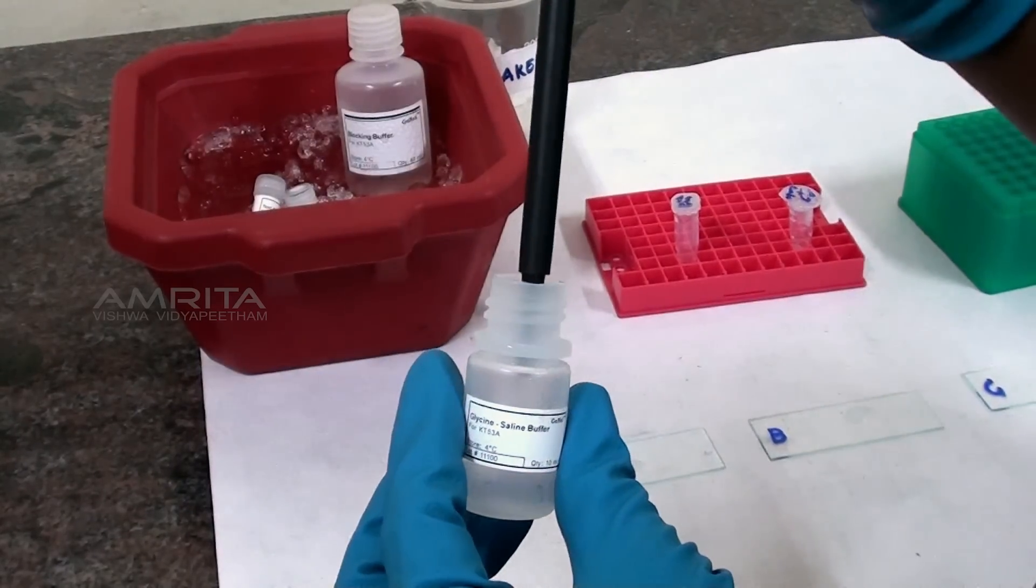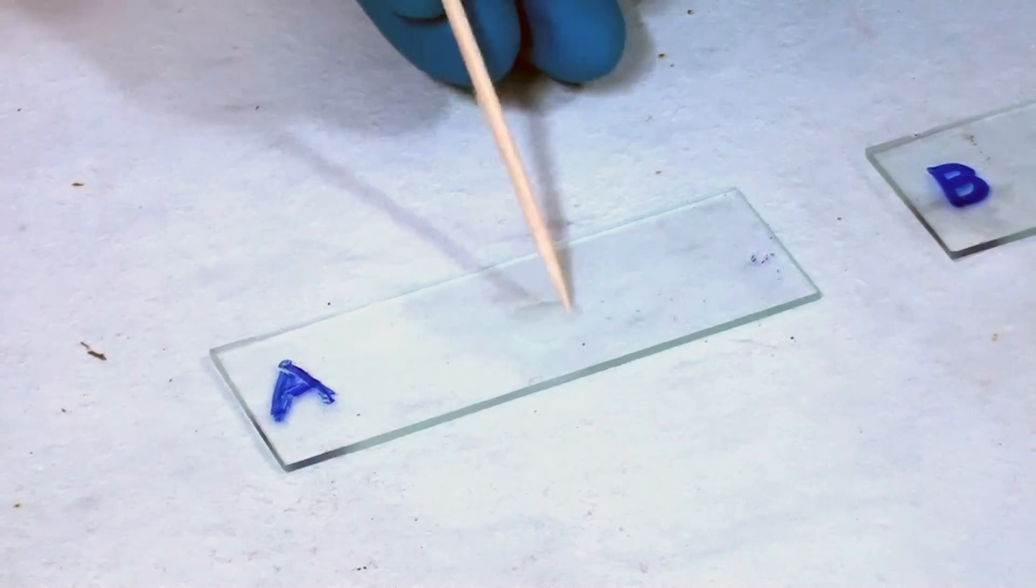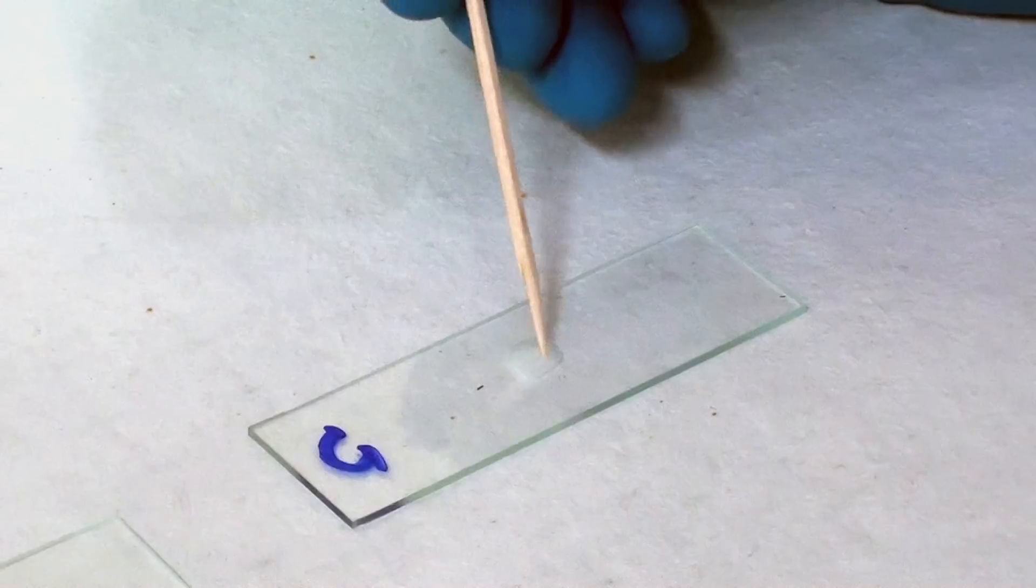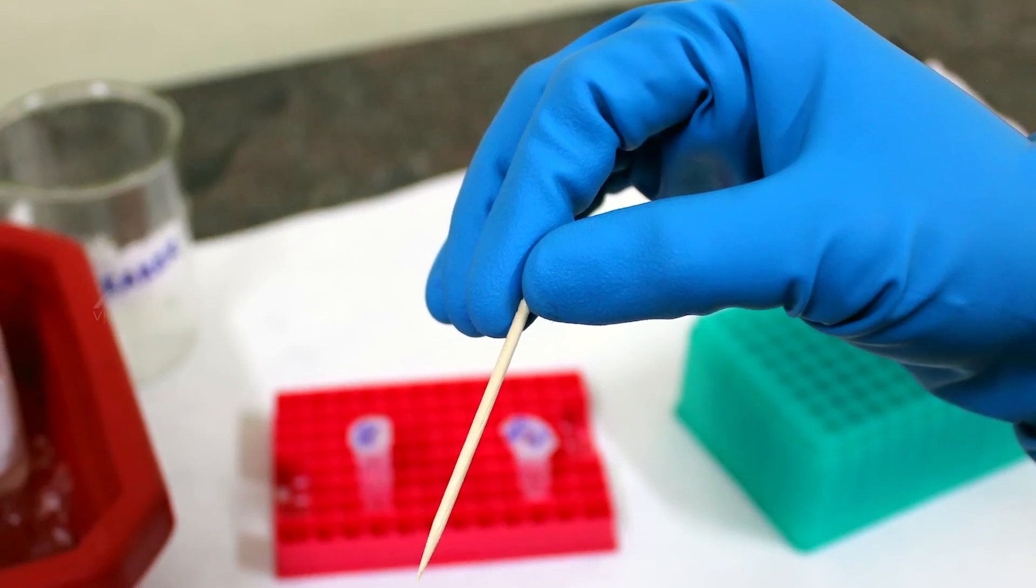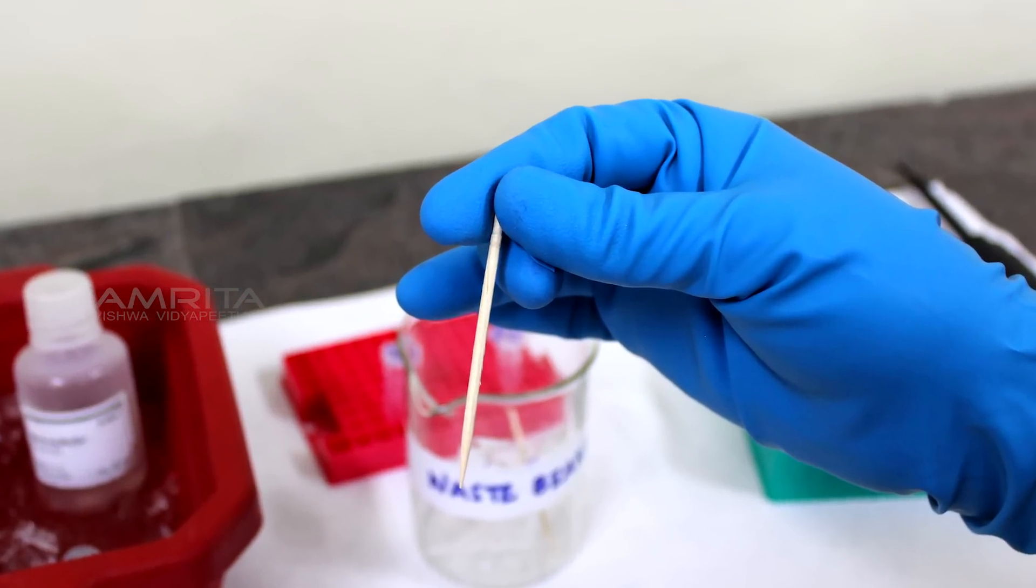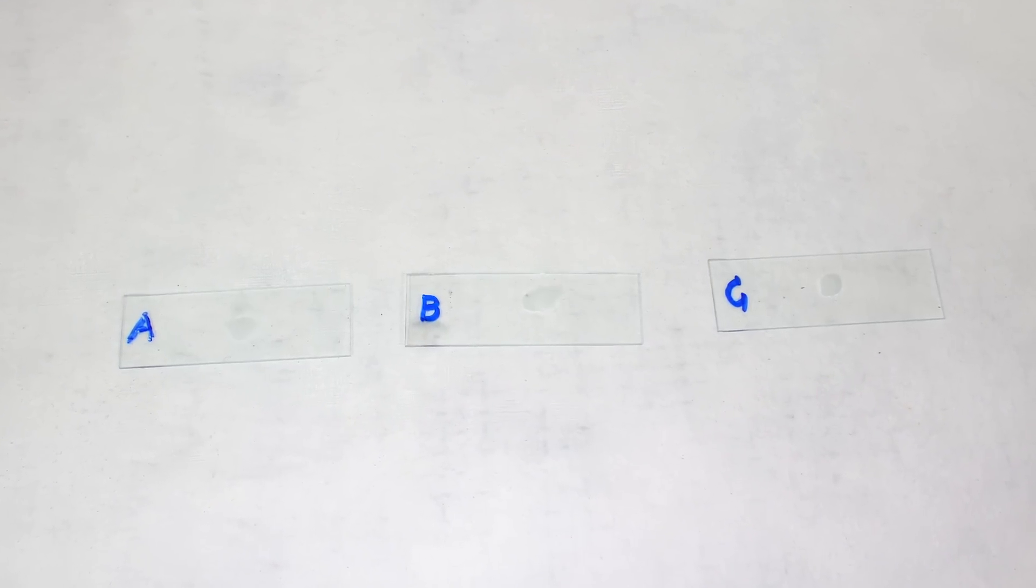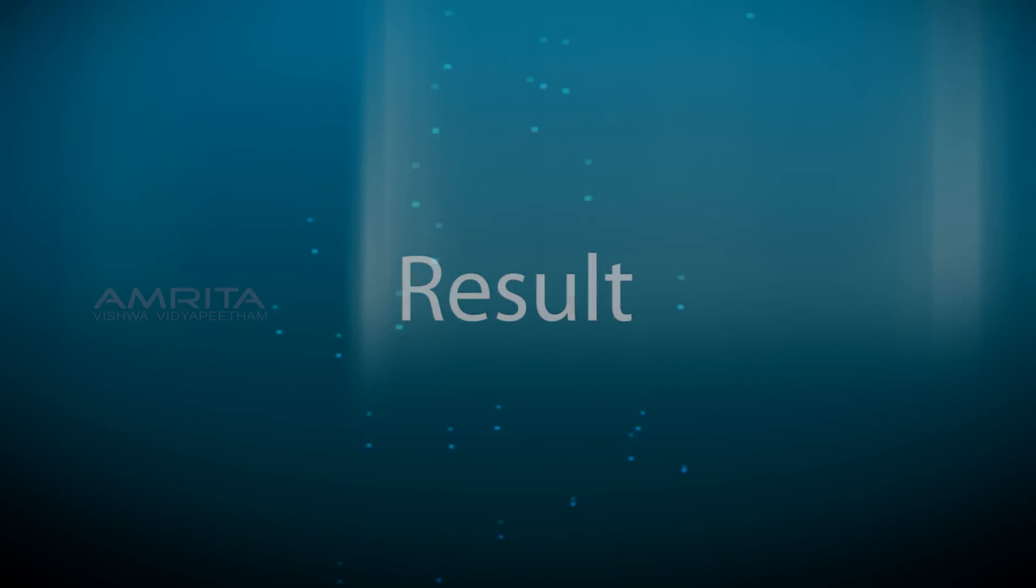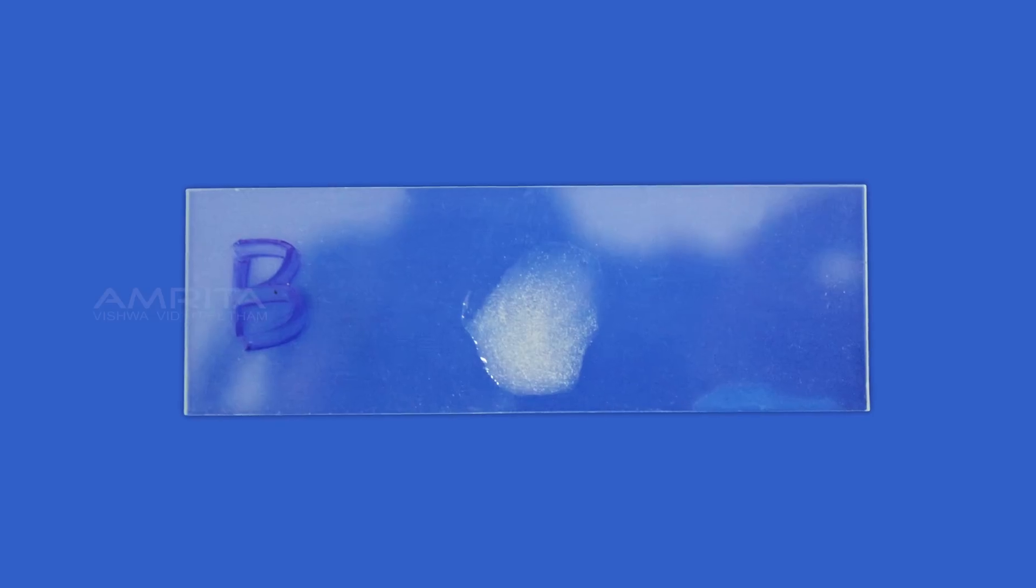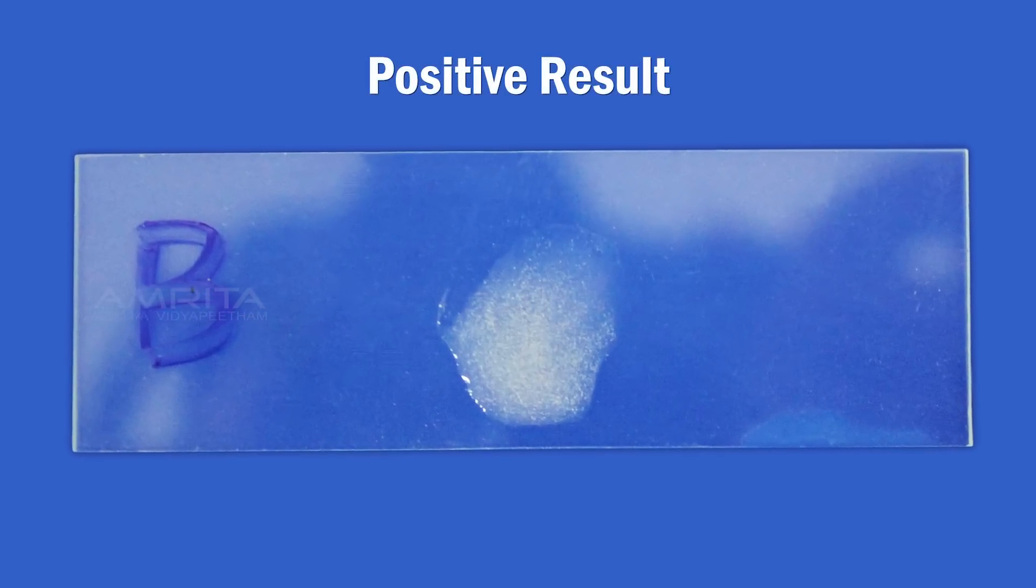Add 10 microliters of glycine saline buffer to slide C. Take a toothpick and mix the contents on each slide. Discard the toothpick after using it for one slide and use a new one for the next. After mixing, wait two minutes to observe the result. The clumping of latex beads (agglutination) indicates the presence of suspected particles.